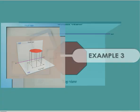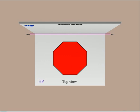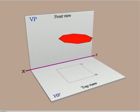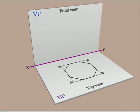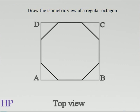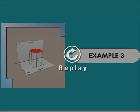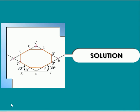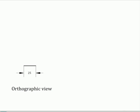Example problem. In this problem, the task is to draw the isometric view of a regular octagon of side 25 mm. The figure shows the regular octagon as the top view and it is also enclosed in a box ABCD. Draw the regular octagon of side 25 mm with its surface parallel to HP.